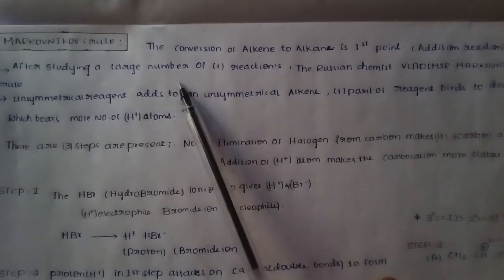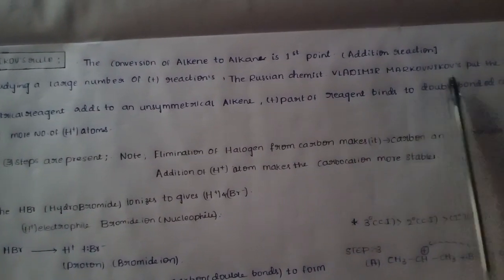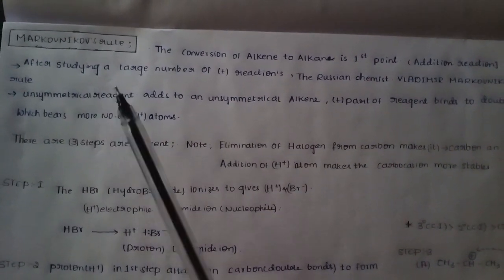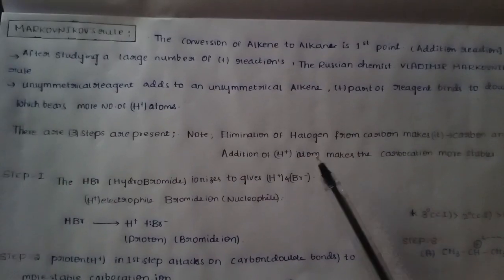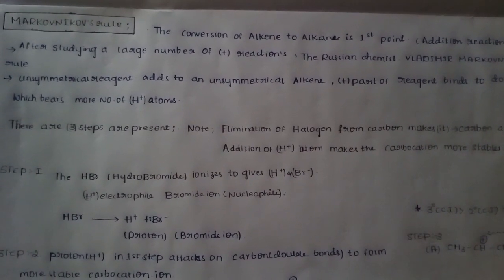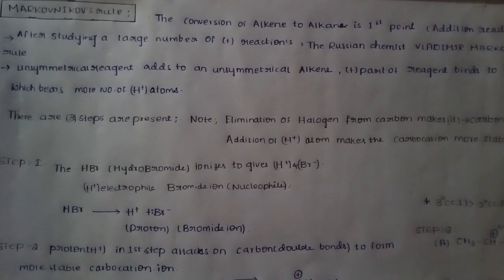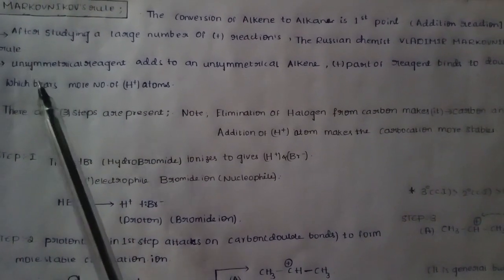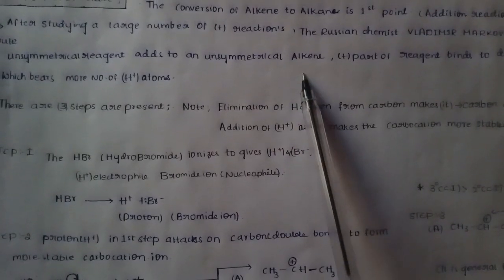After studying a large number of addition reactions, the Russian chemist Vladimir Markovnikov put forward the following rule. An unsymmetrical reagent adds to an unsymmetrical alkene.